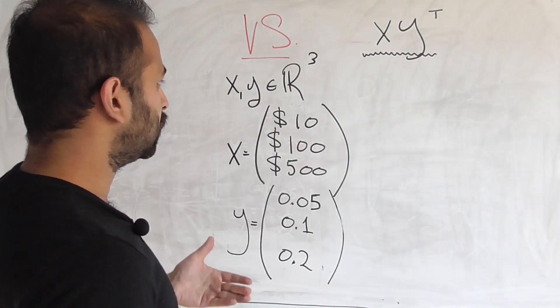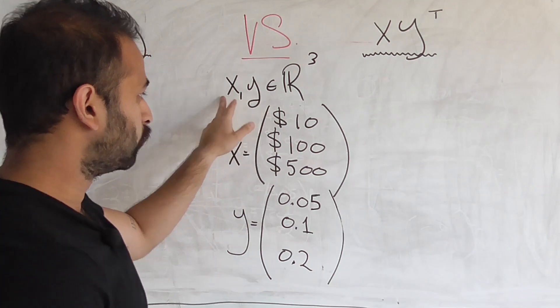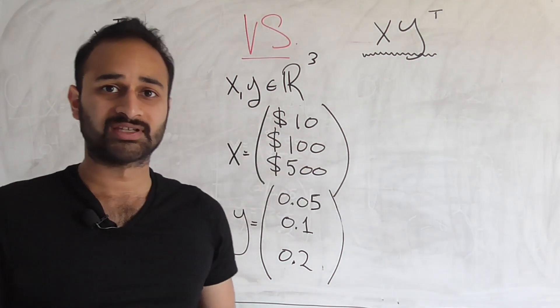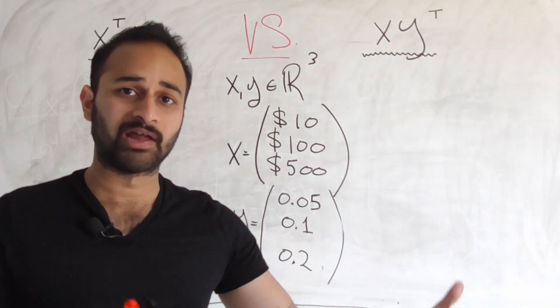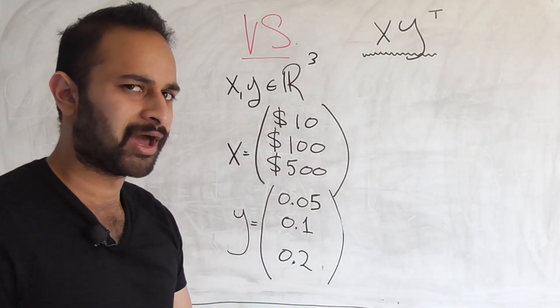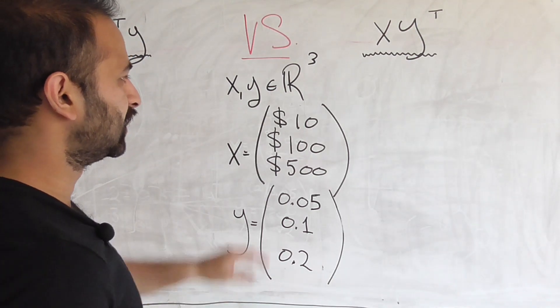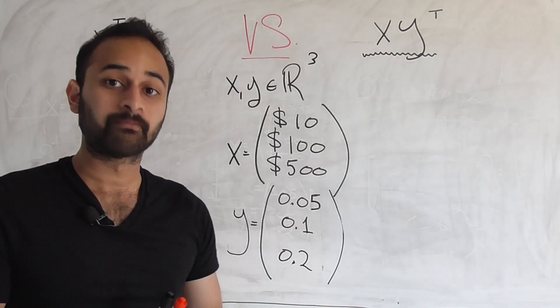The first thing to note is that for either of these operations to even make any sense, X and Y, which are vectors, need to live in the same dimensional space, which just means that they need to contain the same number of elements or else neither of these operations actually makes any sense mathematically. For our purposes, we're going to say they live in R3, which means that each have three numbers inside of them.